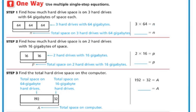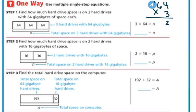So let's do that right now. 64 times 3: 4 times 3 is 12. I'm going to regroup my 10. Put my ones down here and then I have 6 times 3 which is 18 plus my regrouped 1 is 19. So n equals 192.